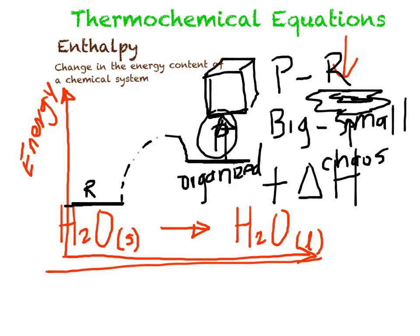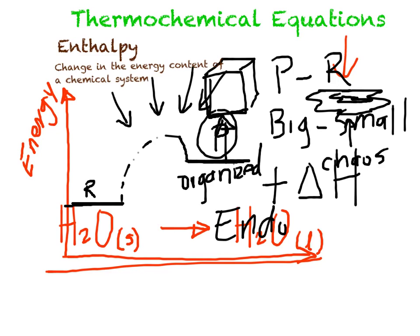The only explanation is that in this chemical process, you gain energy — you get some energy from the surroundings. Energy is flowing in, going inside of this chemical reaction. Therefore, we call it endothermic, because 'endo' means going in. When you have a positive delta H, you are dealing with an endothermic reaction. I hope you understand the terms endo and exothermic and how to read these energy diagrams.